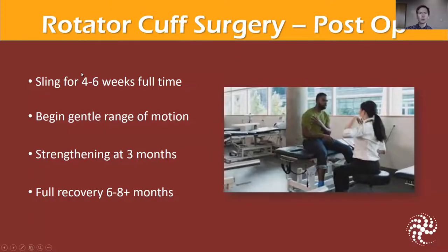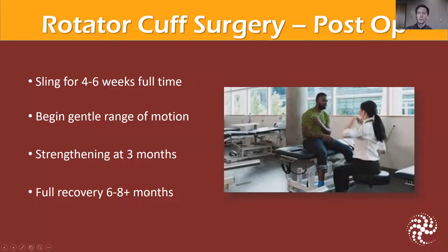Post-op protocol: four to six weeks of full-time sling wear, then beginning gentle range of motion with strengthening commencing at about three months. It's about a quarter of the year, and then full recovery is seen at about six to eight months. Most folks don't need physical therapy that entire time, but after the three to four month mark, patients are working on home range of motion exercises and strengthening the shoulder.